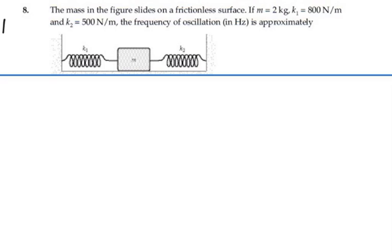Here's problem 15.8. The mass in the figure slides on a frictionless surface. If the mass is 2 kilograms, the spring constant of k1 is 800 newtons per meter, and spring constant of k2 is 500 newtons per meter, the frequency of oscillation in hertz is approximately...